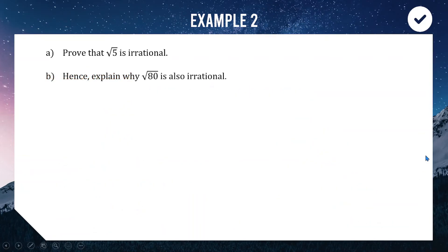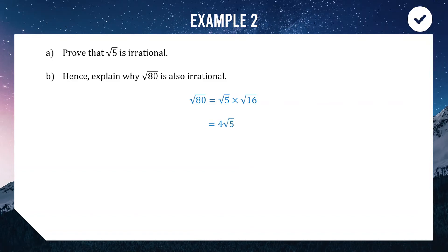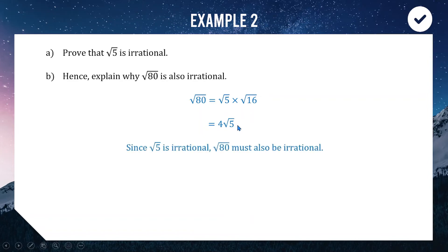Now let's use that to explain why √80 is also irrational. We write √80 = √(5 × 16) = √5 × √16 = 4√5. In part A we just proved √5 is irrational, so it's logical to say 4 × √5 is also irrational. Multiplying an irrational number by a whole number gives a result that is also irrational. That completes the proof.